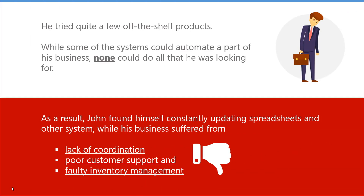He tried quite a few off-the-shelf products. While some systems could automate a part of his business, none could do all that he was looking for. As a result, John found himself constantly updating spreadsheets and multiple systems, while his business suffered from lack of coordination, poor customer support, and faulty inventory management. John needed a solution and he needed it fast.